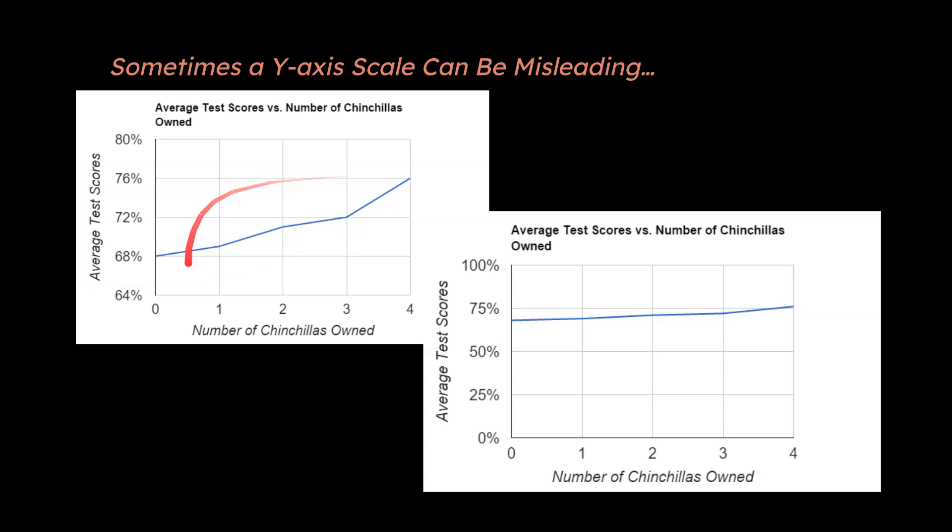if you looked at the data like this, it might look like there's a causal or a correlational relationship where like, hey, the more chinchillas you own, the better you do on tests. But if you were to plot it out like this, where you start from zero, this is exactly the same data. You can notice that there really isn't much of a correlation here with the greater number of chinchillas owned and doing better on tests. And that's exactly what we would expect, right?